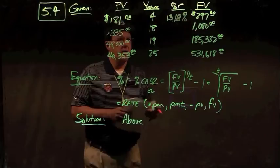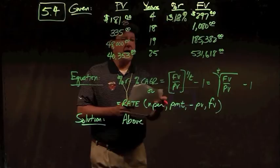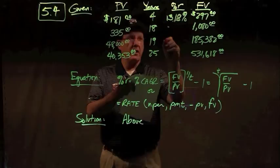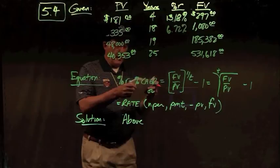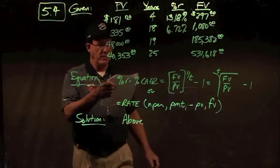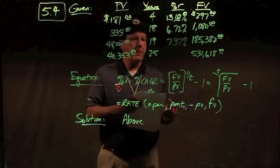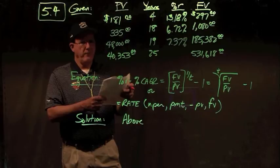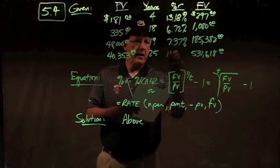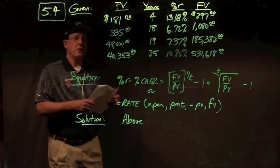Next: $1,080 divided by $335 to the 1/18th power gives a rate of 6.72%. Third: $185,382 divided by $48,000 to the 1/19th power gives 7.37%. Last: $531,618 divided by $40,353 to the 1/25th power gives 10.86%. Those are your answers to problem 5.4.